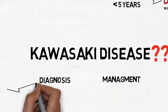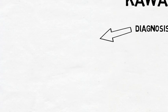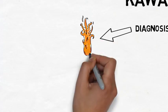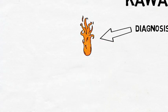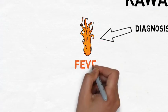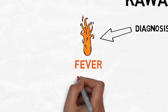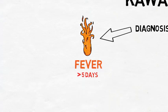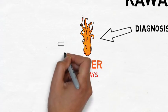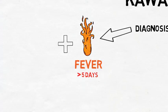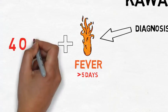So how can we diagnose Kawasaki disease? First of all, we need fever. The fever must last for more than 5 days. In addition to the fever, we need 4 of the following 5 symptoms.